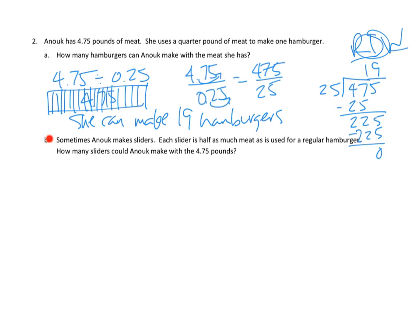What I really want to look at though is part B. Sometimes Anouk makes sliders. Each slider is half as much meat as used for a regular hamburger. How many sliders could Anouk make with the 4.75 pounds? So let me think about this. I could figure out that 0.25 pounds is what a quarter pounder is, and a slider is half as much, so we could divide this by two. But I'm thinking there's an easier way.